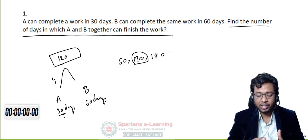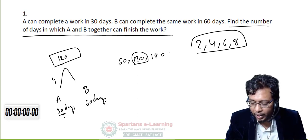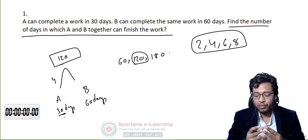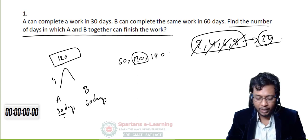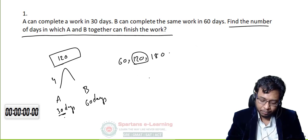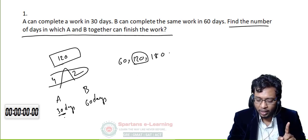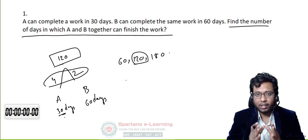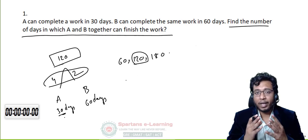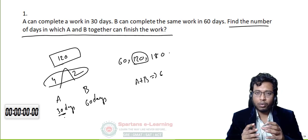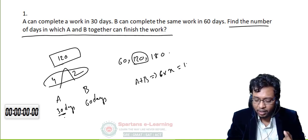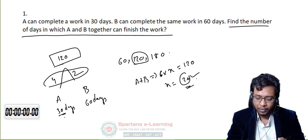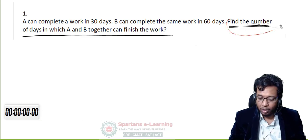Now I will tell you the ratio method — this is completely conceptual. In time and work, work is a constant. When the work is constant, time is inversely proportional to efficiency. Suppose I can build a wall in 30 days and you can build it in 60 days. You are taking more time than me because you are weaker — your efficiency is less, my efficiency is more. So if time ratio is 1:2, the efficiency ratio is 2:1.